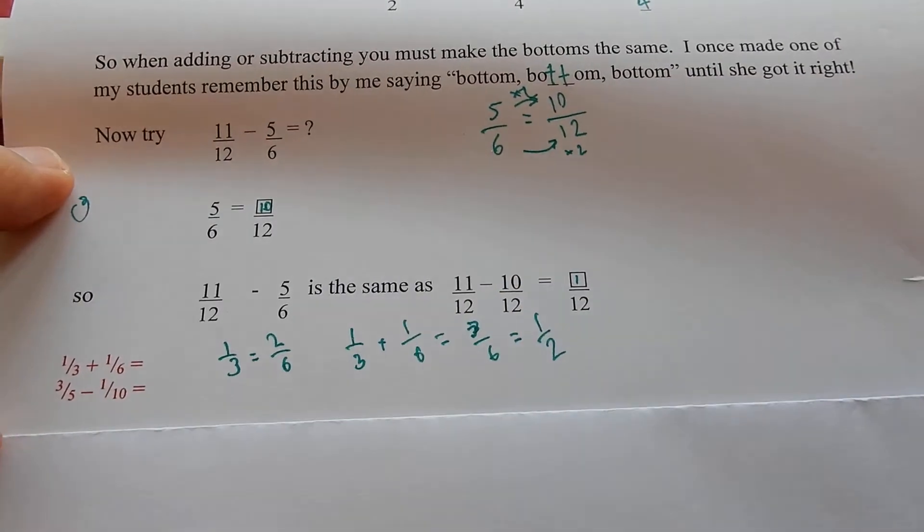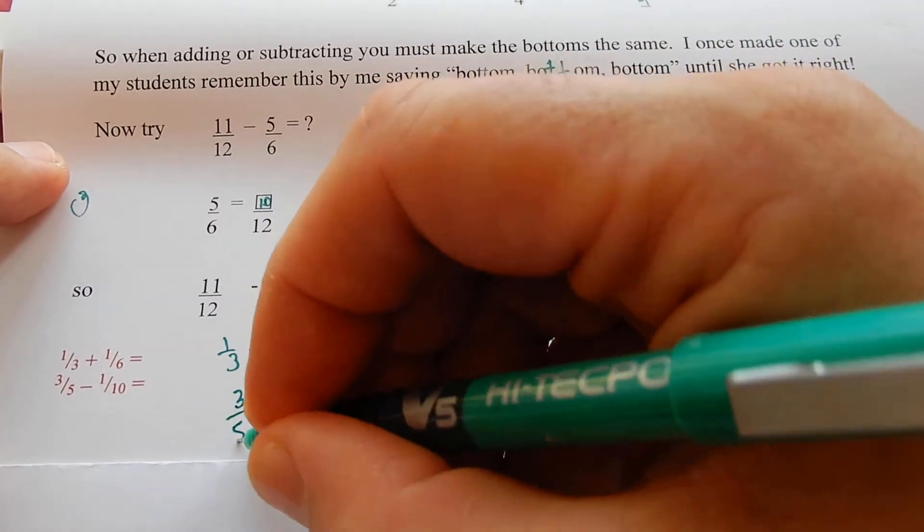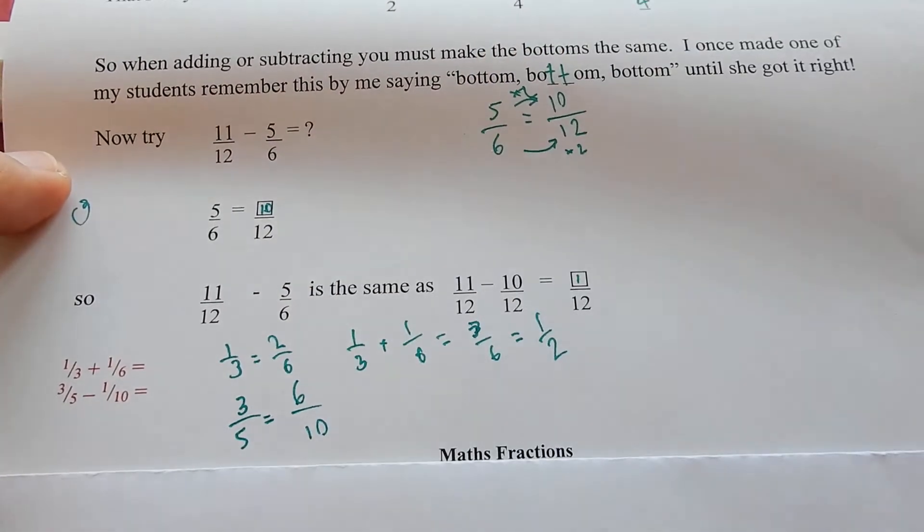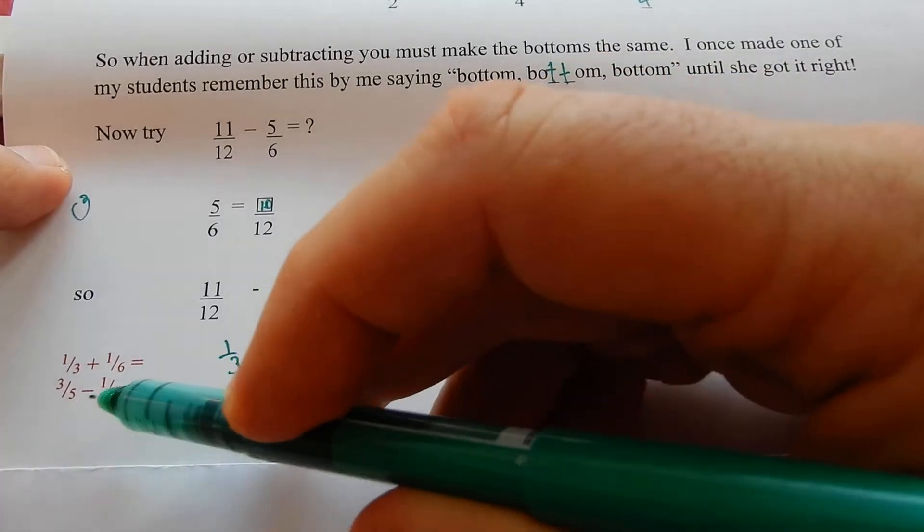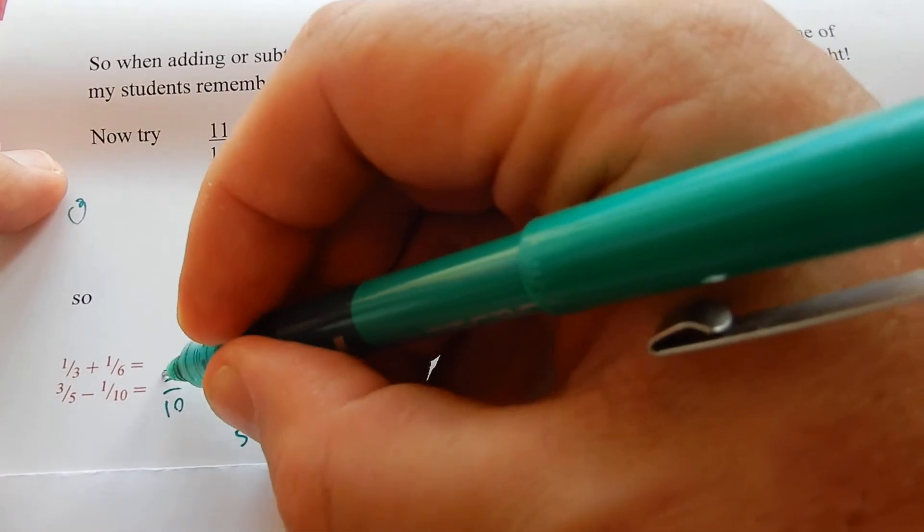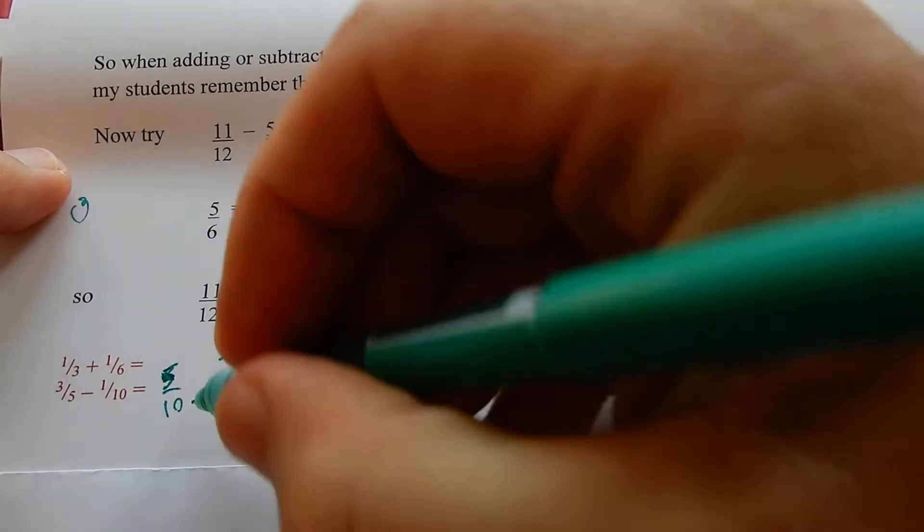Three fifths take away one tenth. Three fifths is how many tenths? Times two the bottom, so times two the top, six tenths. Six tenths take away one tenth, five tenths. Do it on your calculator. Your calculator goes straight to five tenths. Good.